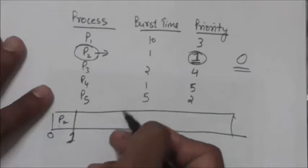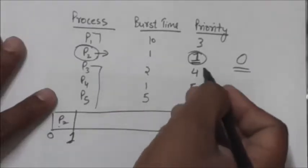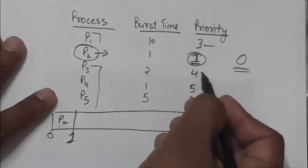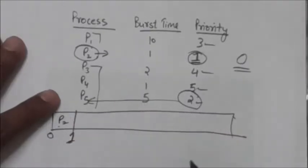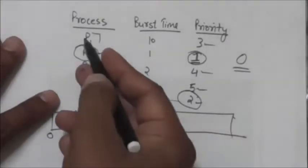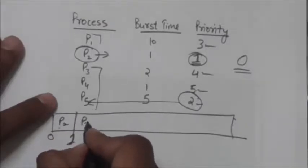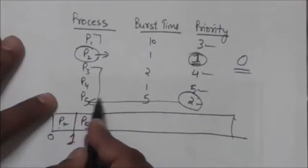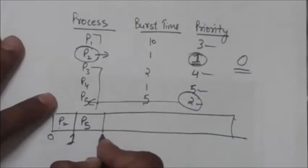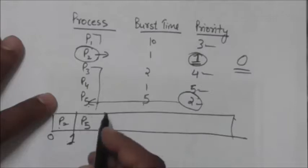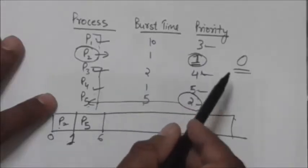Among the remaining processes P1, P3, P4, and P5, the lowest priority number is 2, which indicates the priority of process P5. So P5 has the highest priority among the remaining processes. At time 1, the CPU is allocated to P5. The burst time of P5 is 5, so at time 6, P5 will release the CPU.